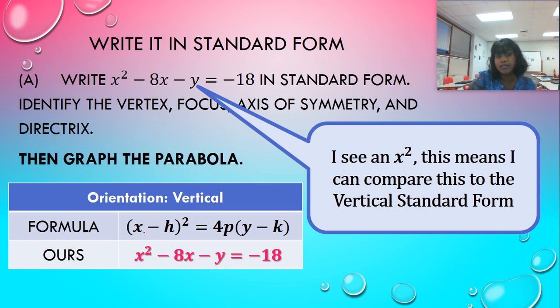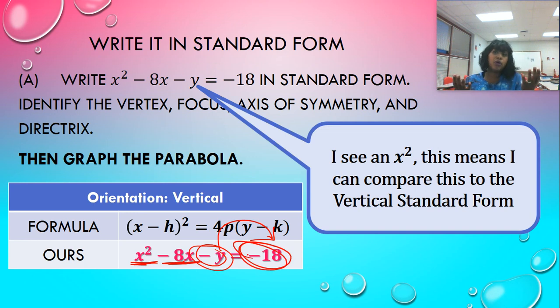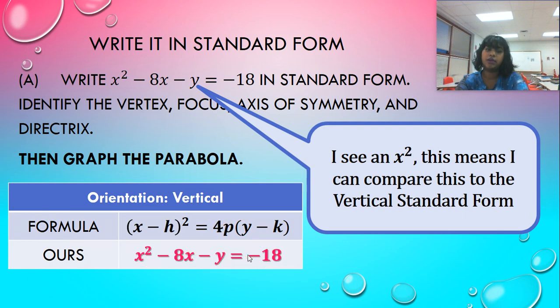So some notes about how I'm going to manipulate it. What do I see? My x is on the left side. So I want to keep this buddy and this buddy on the left side, because those are my x's. But my y is on the right side. So I actually want to move this guy over. And my negative 18, I don't know what I'm going to do with it. It's probably related to my p-value. But I want to triple check first.